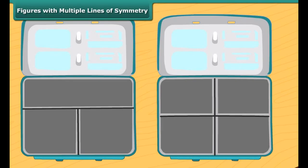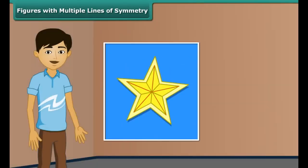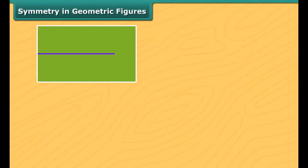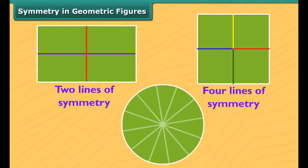Collect the objects from the table and keep them into the group. Archie has two lunch boxes. One has three lines of symmetry. She doesn't like this box and keeps it away. She picks up another one. Let us check out. Oh, this box has four lines of symmetry.